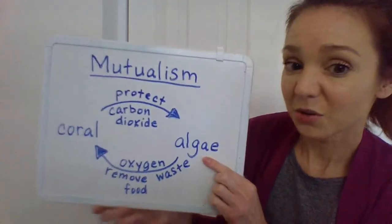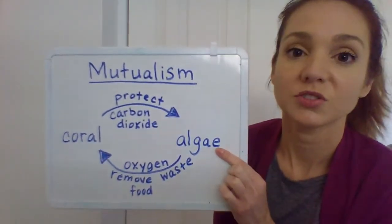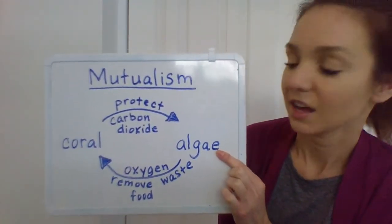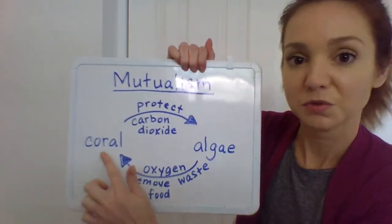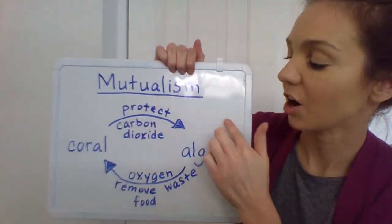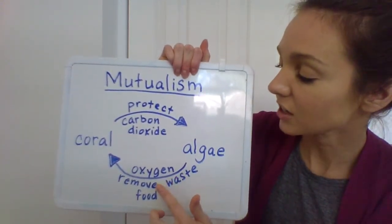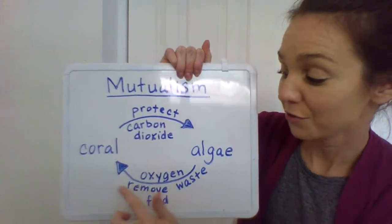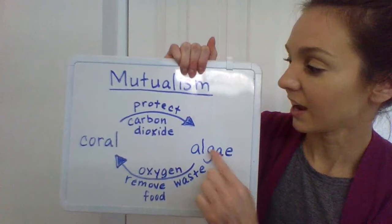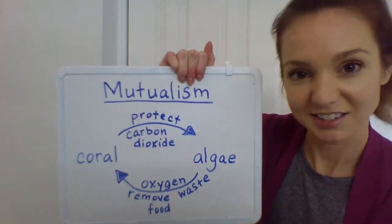The algae also helps to feed the coral. While algae is going through photosynthesis, it's making different products like glucose and amino acids — all different things that can be used as food by the coral. So as the coral is giving these gifts of protection and carbon dioxide to the algae, in return it's getting a gift of oxygen, waste removal, and food from the algae. Both plant and animal are benefiting from being near each other. Isn't that cool?